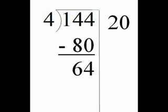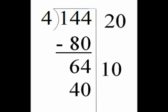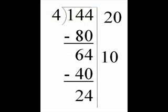But instead of starting over, we can just write 10 on the side. Now we have 10 times 4 is 40. And we subtract. 64 minus 40 is 24. Now we're back to where we were at the end of the last problem.